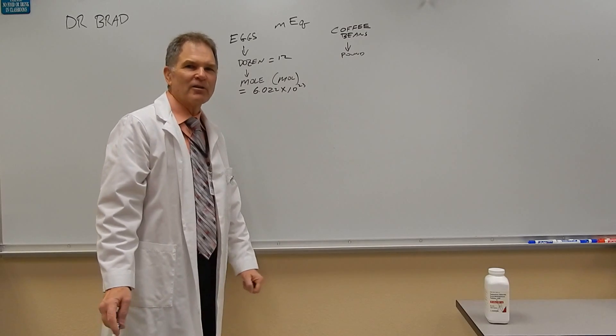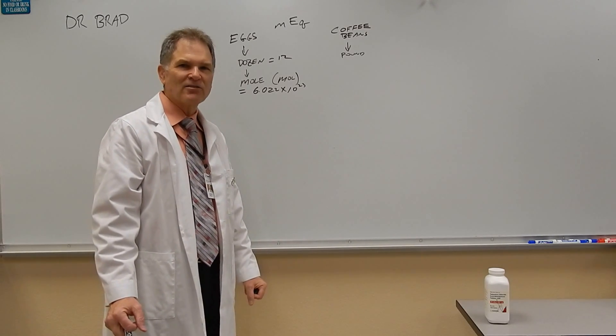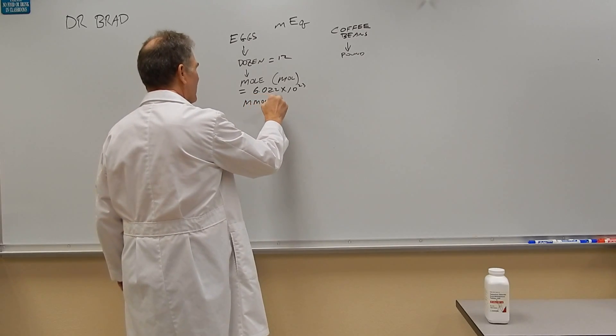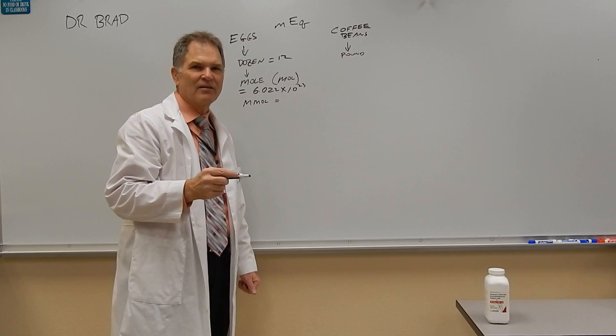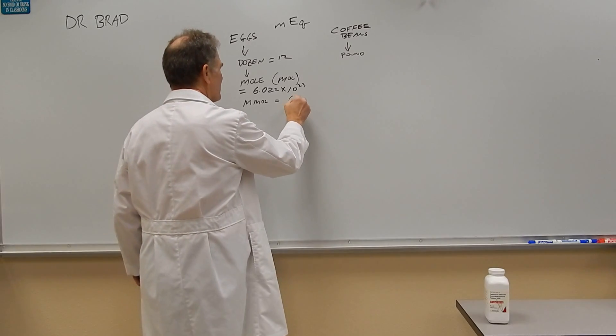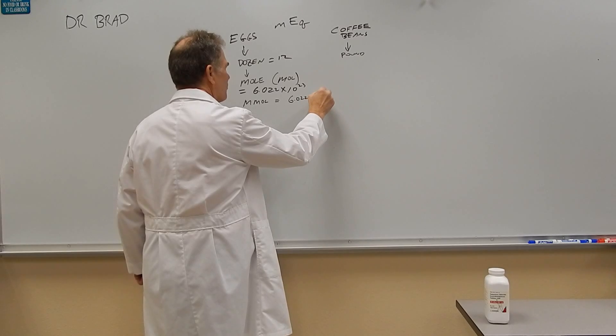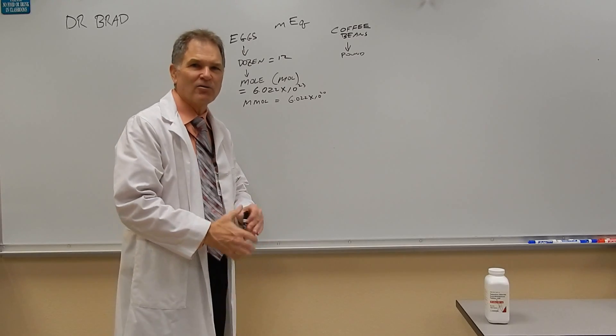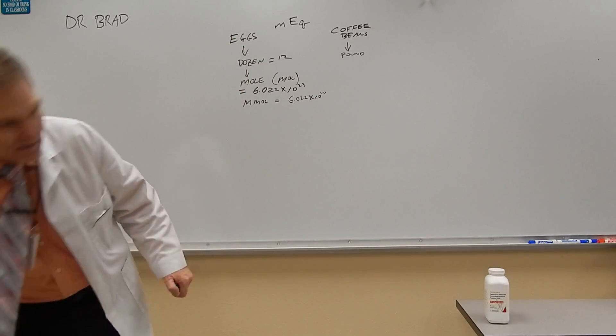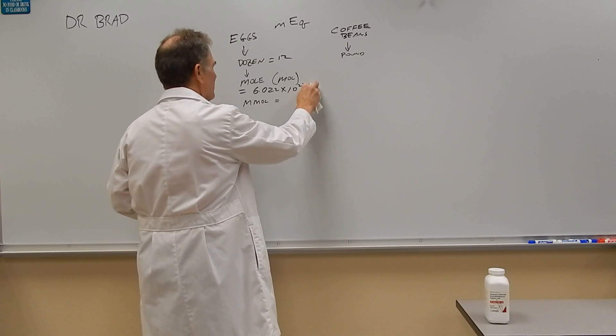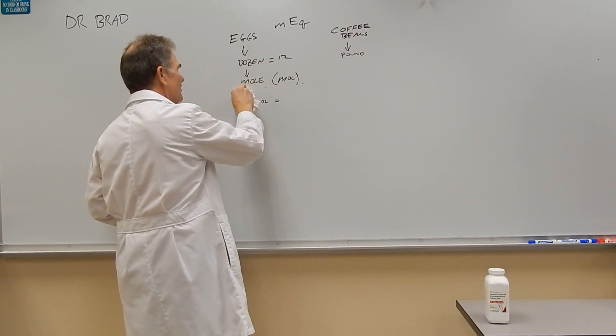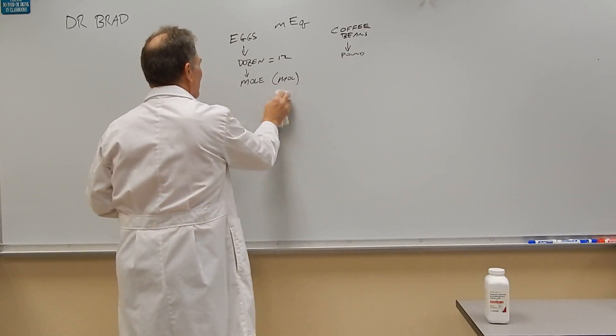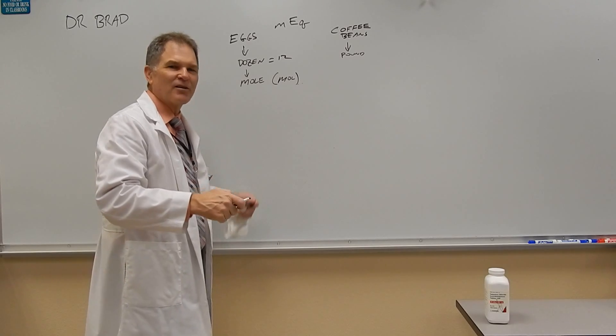So just like a milligram is 1 one-thousandth of a gram, a millimole, M-M-O-L, is 1 one-thousandth of a mole. So it would be 6.022 times 10 to the 20th. So you don't need to know that number. It's kind of fun to know, but you don't need to know it. So let's erase that number. Sorry, Avogadro.